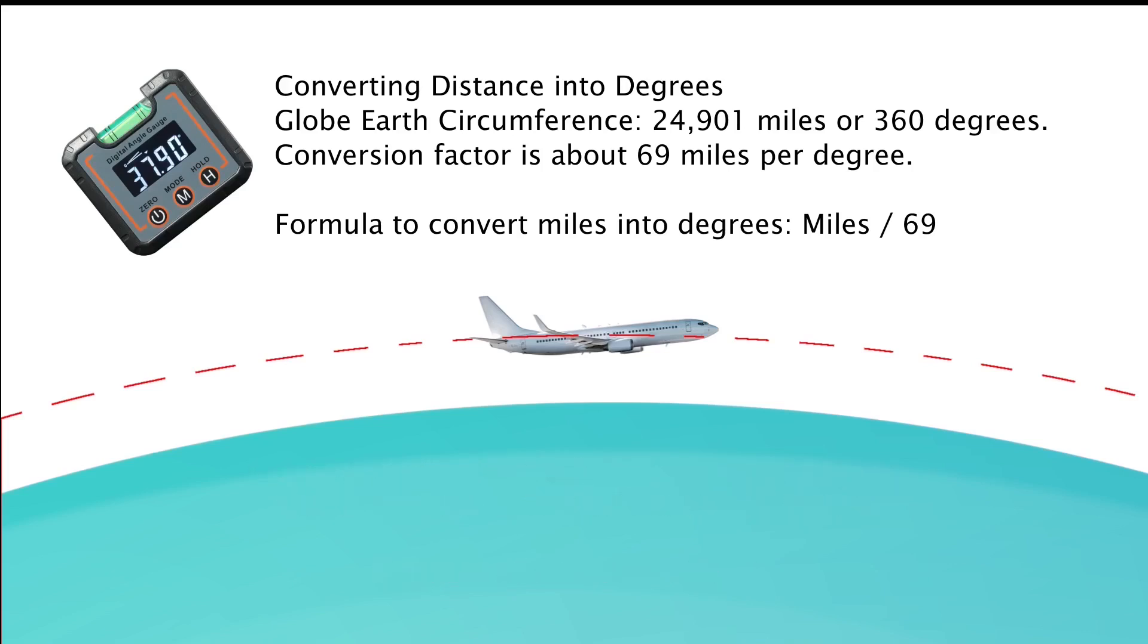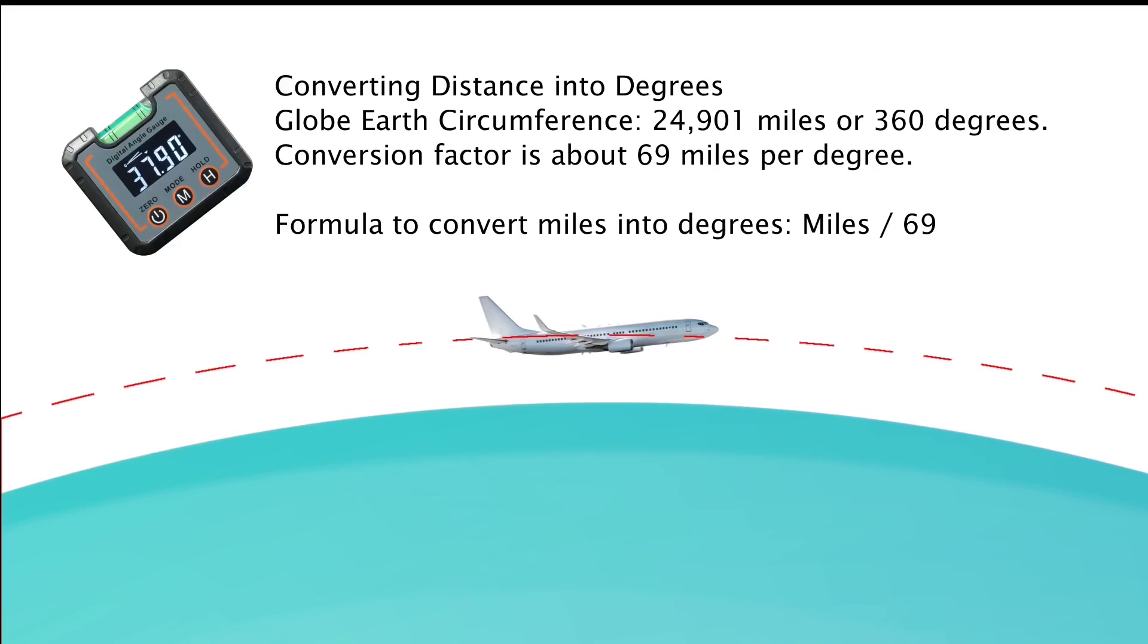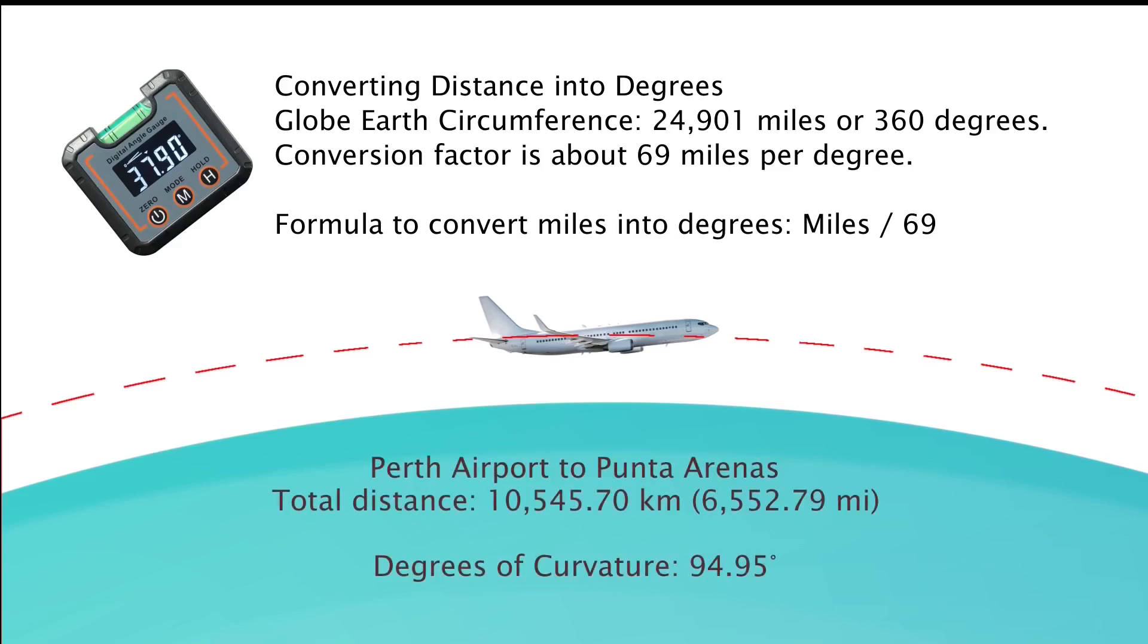Now if you are heading from Perth Airport in Australia, for example, and heading to Union Glacier in Antarctica, that would be a total distance of 4,684 miles. And so the degrees of curvature you should be able to measure then is almost 68 degrees, or 67.88 degrees to be exact. And if you are going to Punta Arenas Airport from Perth, then that would be a total distance of 10,000 kilometers, or 6,552 miles. And that would give you 94.95 degrees of curvature.